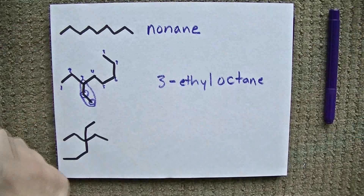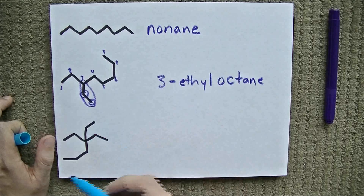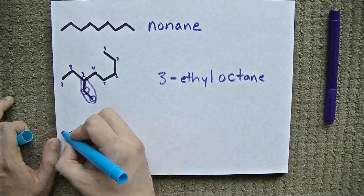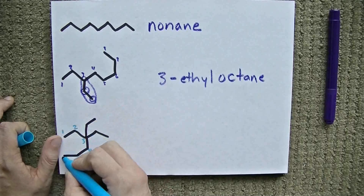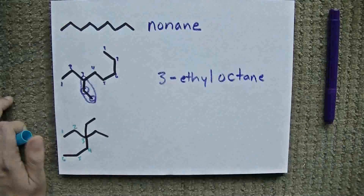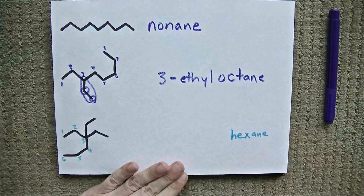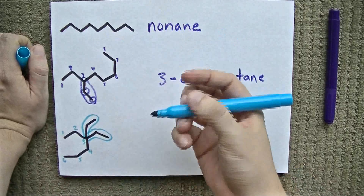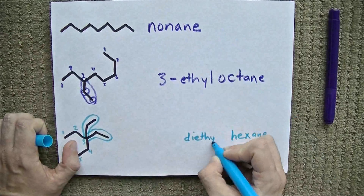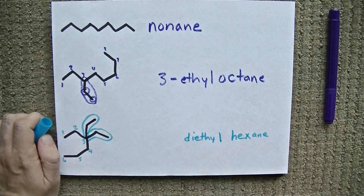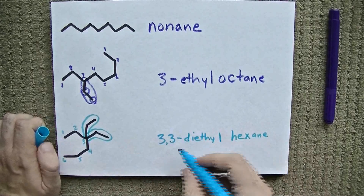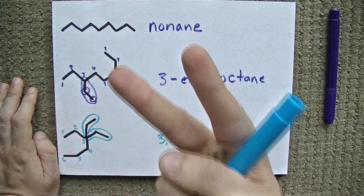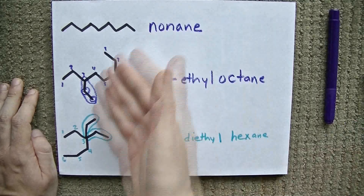Let's try one more together. Let's find the longest carbon chain here. One, two, three, four, five — one, two, three, four, five, six — one, two, three, four, five, six. It looks like it's six carbons. One, two, three, four, five, six — six is a "hex," so we're going to call this a hexane. And we have a two-carbon chain here, and a two-carbon chain here. Two two-carbon chains make it a diethyl. They're both hanging off of number three, so we call it 3,3-diethylhexane. The "di" is something we put in front of branches just to show that we know there are two of them, and thus we need two numbers as well.